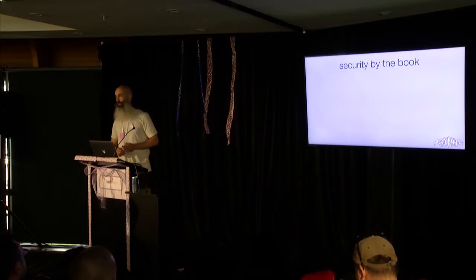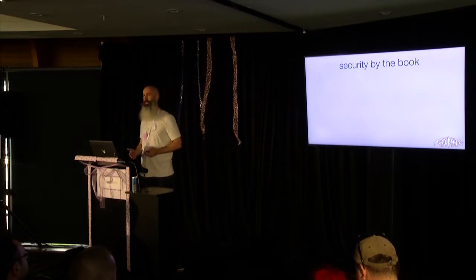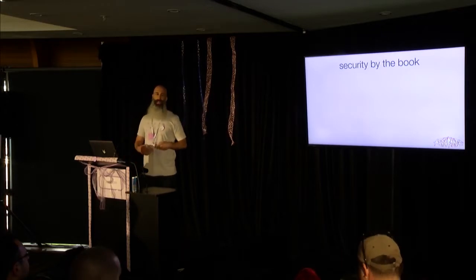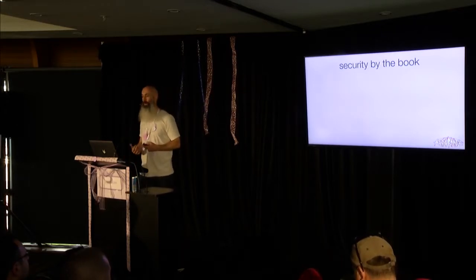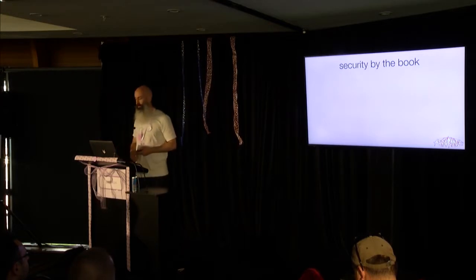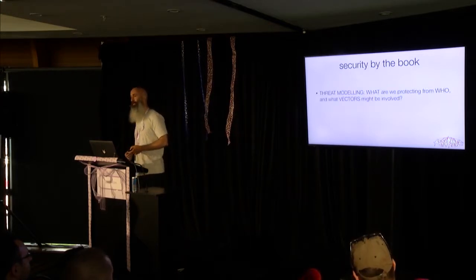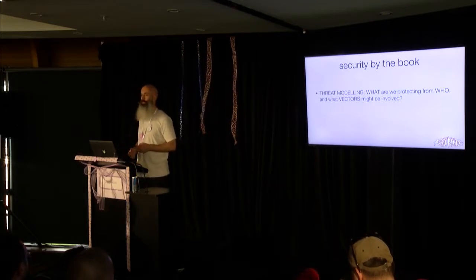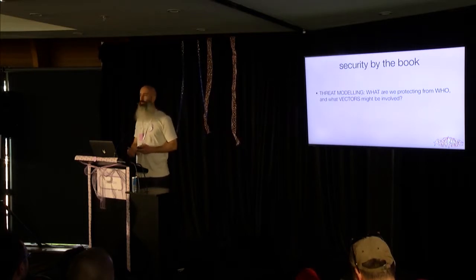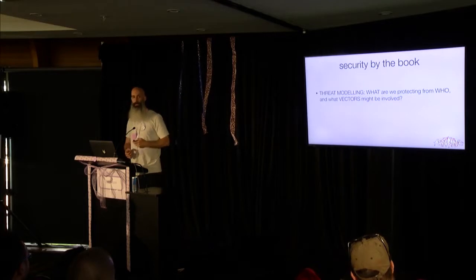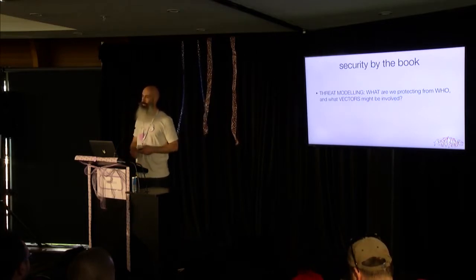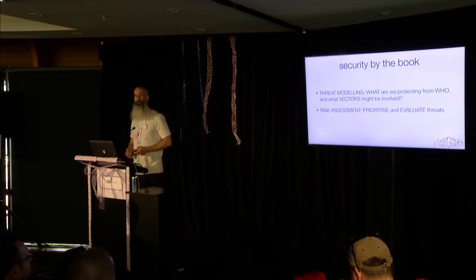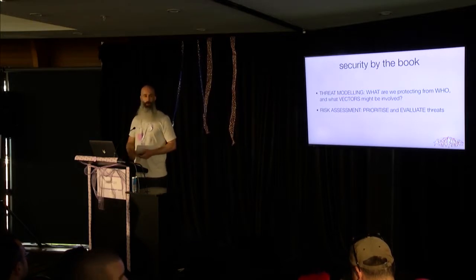This is definitely the driest slide of the presentation — it gets more fun after this. Threat modeling: what are we protecting, who are we protecting it from, and how might they be attacking whatever we're trying to protect? That feeds into risk assessment: how much of a risk is this to our organization, what are our risk criteria, how important are these various things we're trying to protect? We use that to prioritize, and then based on those priorities we implement security controls to hopefully eliminate or reduce these risks.